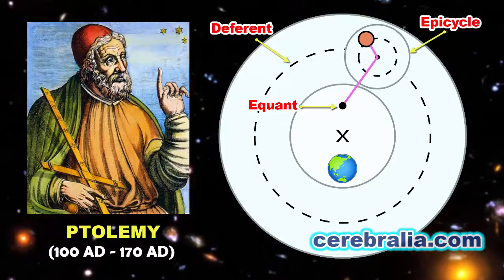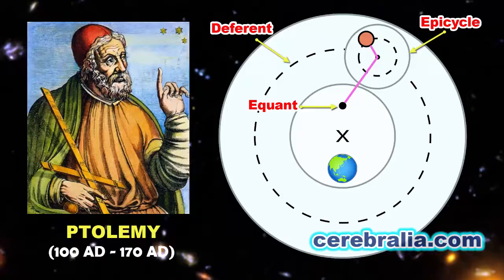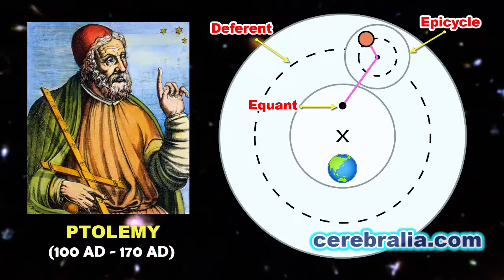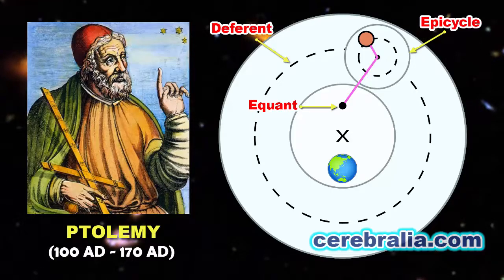Using epicycles, deferent and equants, Ptolemy tried to explain the motions of the planets. His explanation was widely accepted.